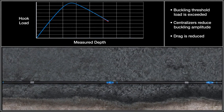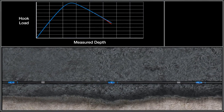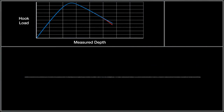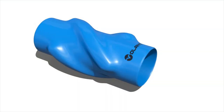Less resistance results in smoother production tubing and casing runs, enabling the string to reach further, faster. Where a poorly centralized string would stick, the use of Volant's Hydroform Centralizers combined with the engineering behind Volant's Centralizer Placement Optimization Solution helps reach total depth more effectively and efficiently.